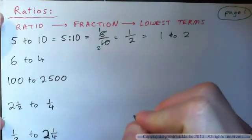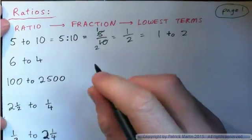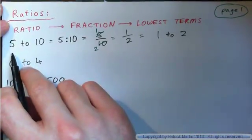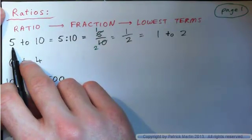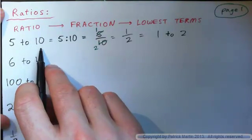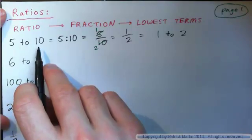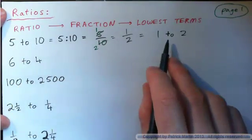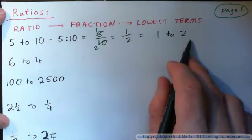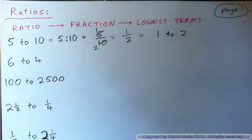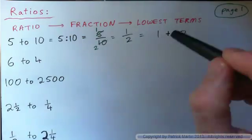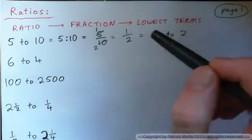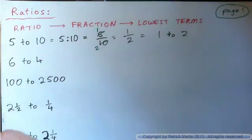It's kind of like if there were 5 boys in a classroom to every 10 girls — that means there's 1 boy to every 2 girls. Does that make sense? So 5 to 10 is the same thing as 1 to 2. There's 2 girls for every 1 boy, or 1 boy to every 2 girls, same as 5 boys to every 10 girls.